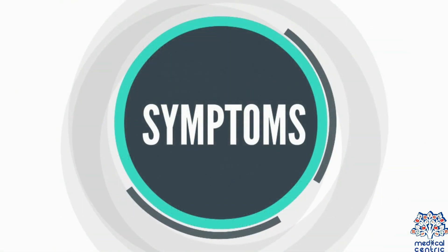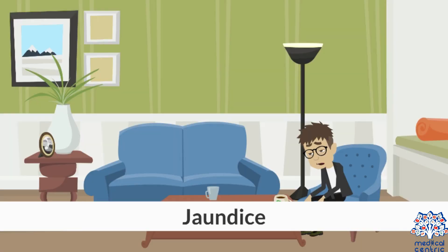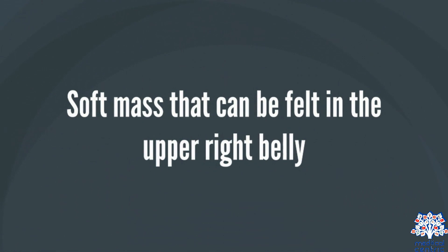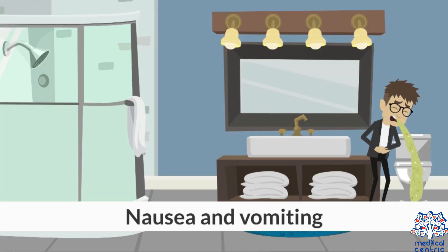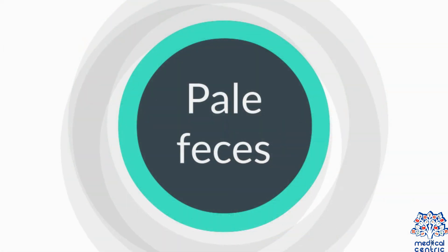Symptoms include severe abdominal pain in the upper right quadrant of the belly, jaundice, a soft mass that can be felt in the upper right belly, fever, nausea and vomiting, and pale feces.